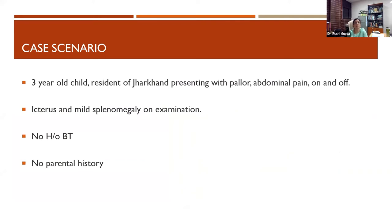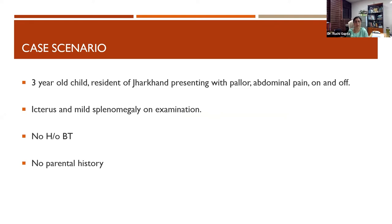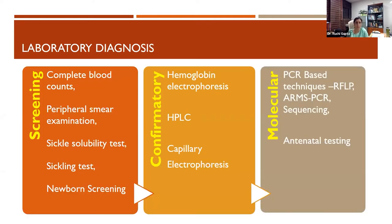Consider this case: a three-year-old child from Jharkhand presenting with pallor and on-and-off abdominal pain. On examination there is icterus and mild splenomegaly, no prior transfusion history, and asymptomatic parents. The fact that he is from Jharkhand gives a clue as to what we are dealing with. He looks like a hemolytic anemia with probable vaso-occlusive crisis causing abdominal pain. For lab workup, we divide this into screening tests, confirmatory tests, and molecular tests.